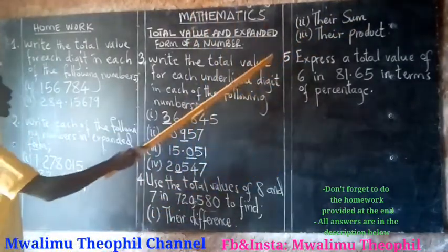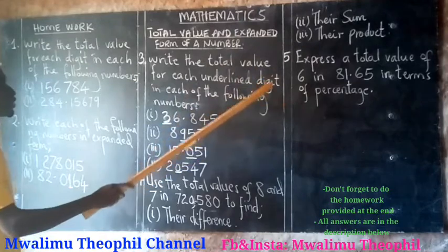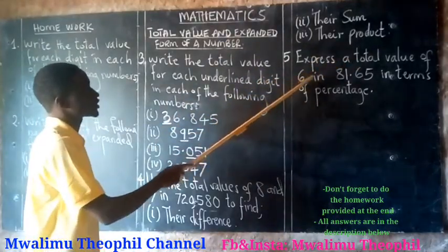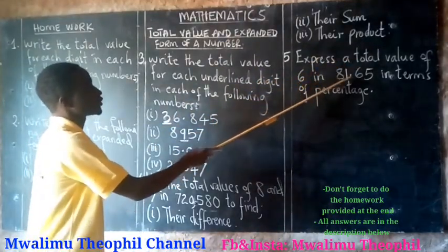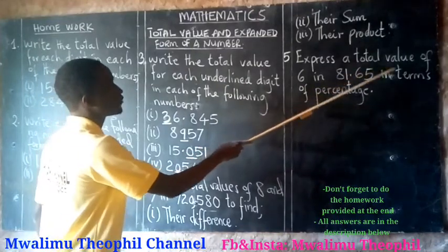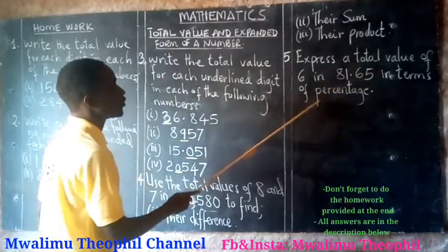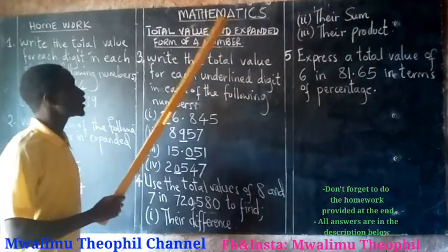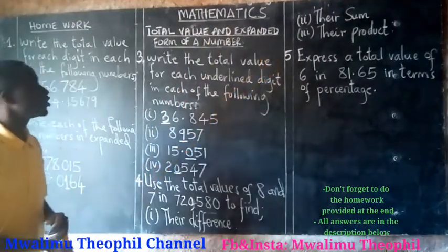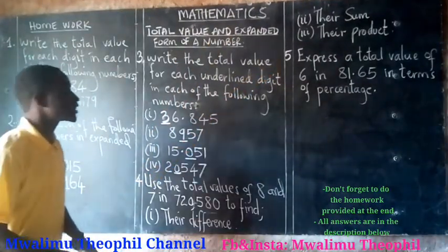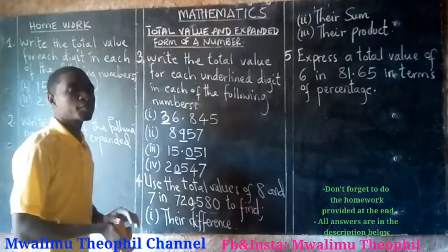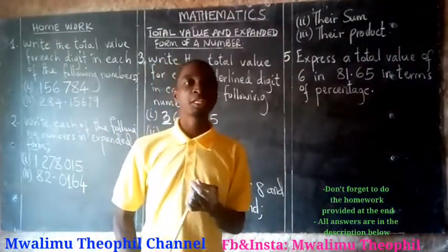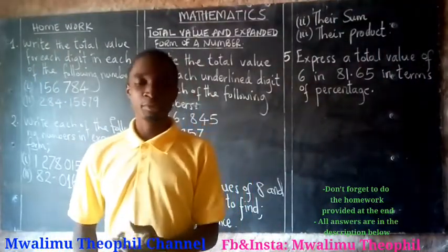Question 5: express the total value of 6 in 81.65 in tenths of percentage. This is the homework — make sure that you do it, and all answers are in the description below. Thank you for attending today's session. I wish you a nice moment.